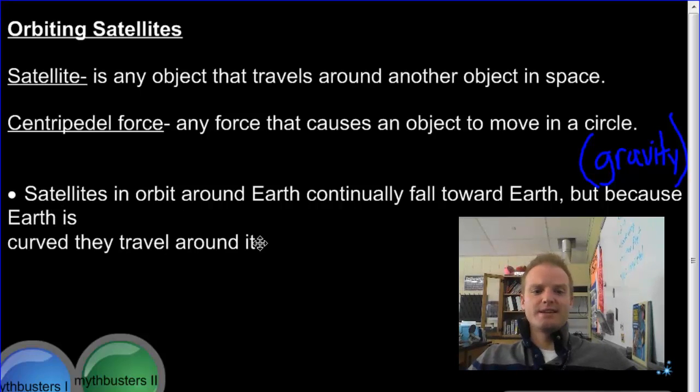So again, there's that statement. Satellites in orbit around Earth continually fall toward Earth, but because Earth is curved, they travel around it. I know it's kind of an abstract idea. We'll talk more about it in class.